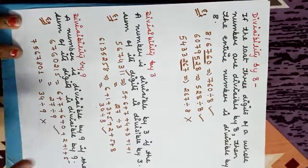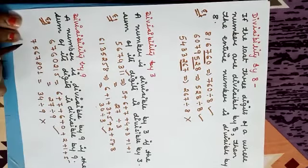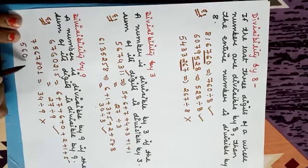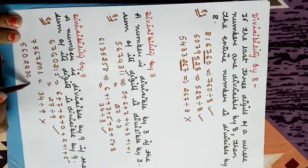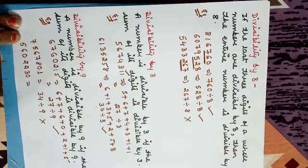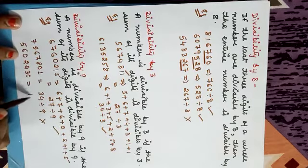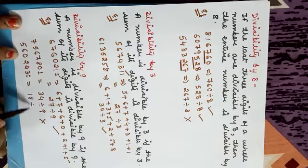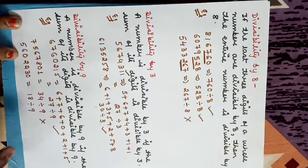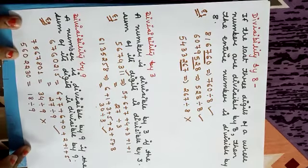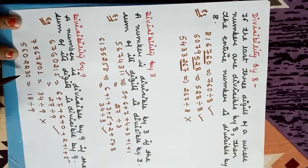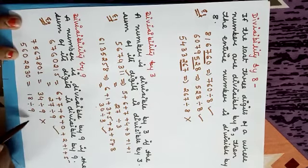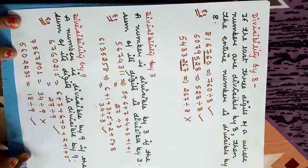Clear? One more example: 5,60,2230. Add all the digits: the sum is 18. Is 18 divisible by 9? Yes, 18 is divisible by 9. So this number is divisible by 9. Got it?